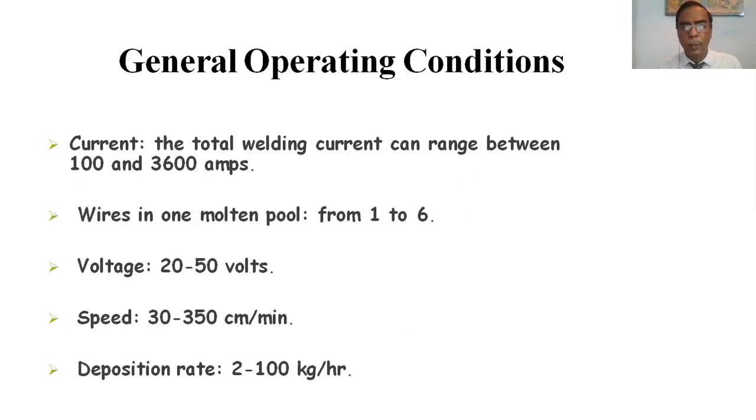General operating conditions. Current: the total welding current can range from 100 ampere to 3600 amperes. Wire diameter: one to six millimeter. Voltage: 20 to 50 volt. Speed: 30 to 350 centimeter per minute. Deposition rate: 2 to 100 kg per hour.